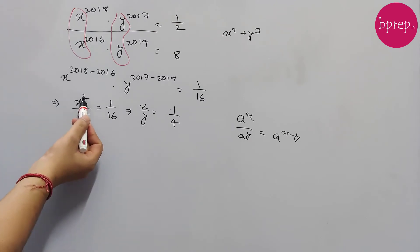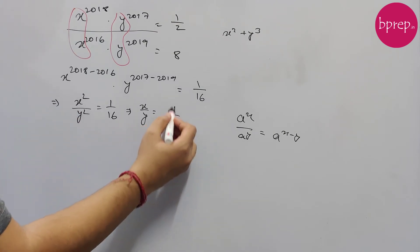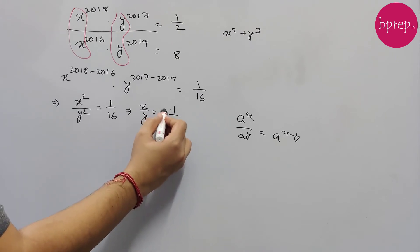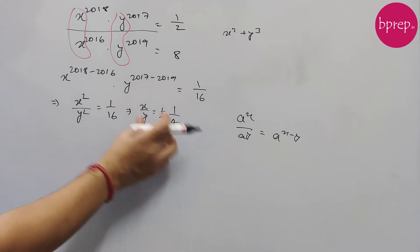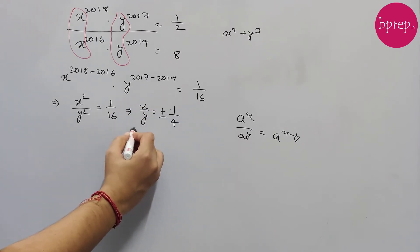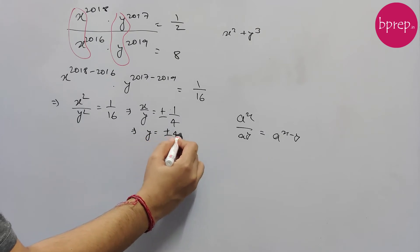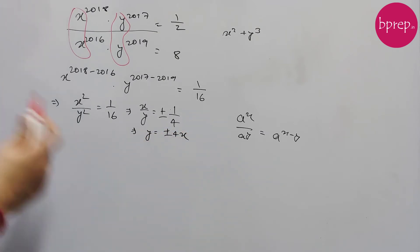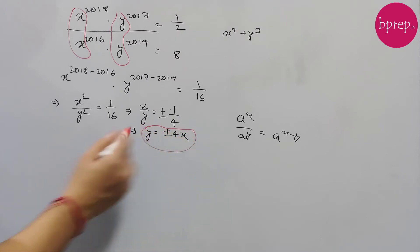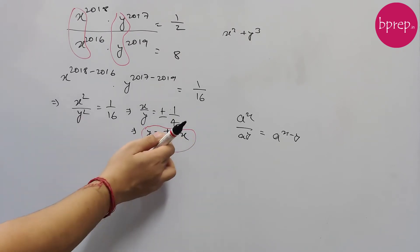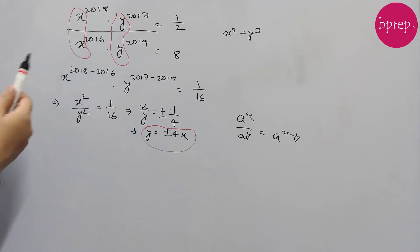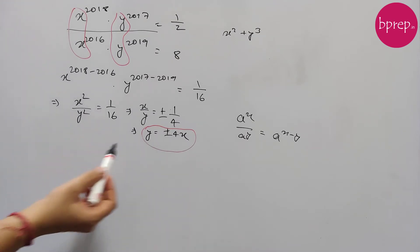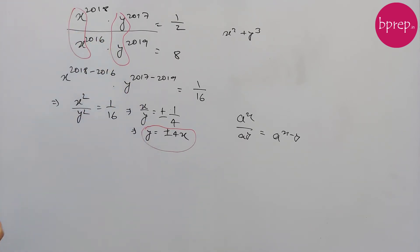Since both numbers are in the form of squares, we can write x over y equals 1/4. But one important thing to note: because this involves a square root, the result can be positive or negative, so we write x/y equals plus or minus 1/4. From this, y equals plus or minus 4x — this is the relation between x and y.